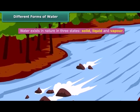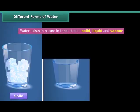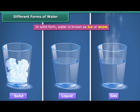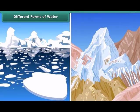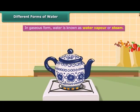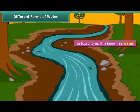Water exists in nature in three states: solid, liquid and gas. In solid form, water is known as ice or snow. It is found at the poles as ice caps and in glaciers and mountains as snow. In gaseous form, water is known as water vapor or steam. But the most common form that water takes is the liquid form. It is in this form that it is known as water.